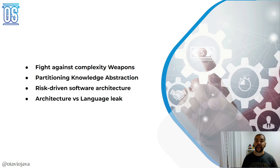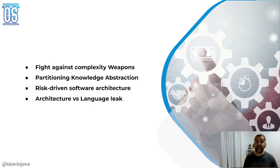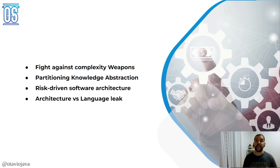Just Enough Software Architecture is a book that also talks around complexity and how important it is to fight against this complexity inside our organization and inside our software product.